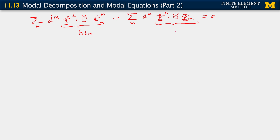And this we know also from the fact that we have the generalized eigenvalue problem at hand — this turns out to be lambda_m delta_lm. And then when we account for the fact that there is a sum over m in each case, the Kronecker delta does its job and leaves us with: for the first term we get d_l_dot, and from the second term we get lambda_l d_l equals 0.